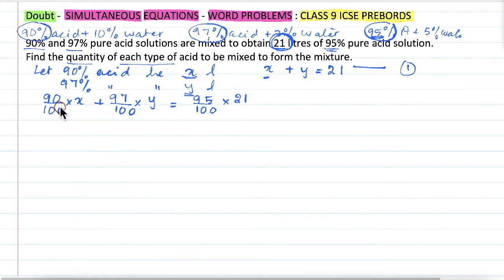can you see over here each fraction has 100 in the denominator? So in order to simplify this, we should multiply this by 100, and when we multiply by 100, we will get our new equation. That will be 90x plus 97y, and that is equal to 95 multiplied by 21.